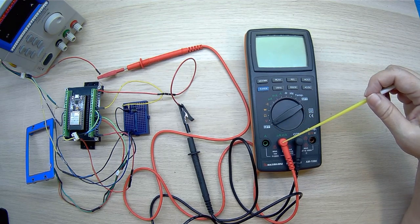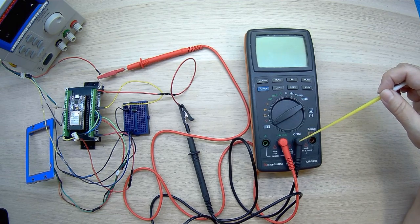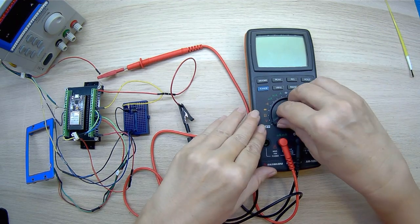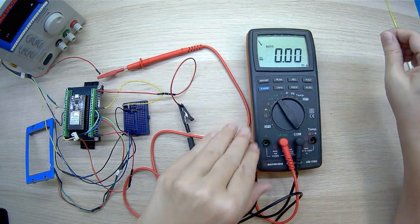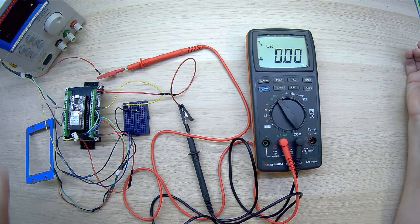We connect our ESP32 module according to the diagram shown in the figure. We use a socket for low currents and a common socket. We turn on the multimeter in current measurement mode milliamps with automatic selection of the measurement range.